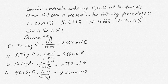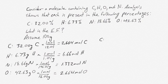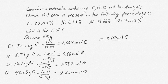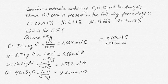Once you know the moles of each atom, you can compare them to one another. You do that by comparing everything to the smallest number of moles. In this case, the smallest number of moles is nitrogen. So we're going to compare the number of moles of carbon, hydrogen, and oxygen to the number of moles of nitrogen in terms of ratios. We have 2.664 moles of carbon, and we're going to divide that by 1.332 moles of nitrogen to find the ratio of carbon to nitrogen atoms.